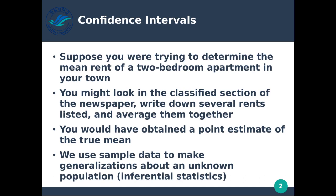If our confidence interval is very big, then that means there's a huge range where values might lie, which means we're not very accurate and can't be very confident that our guess is true. If our confidence interval is very small, then we have a shorter range in which we can say that our values fall within these particular ranges, and our value is hopefully closer to the truth.